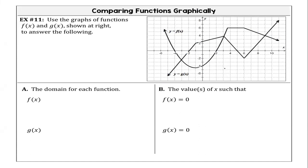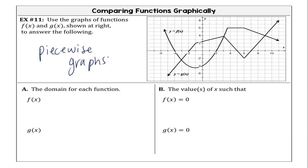Anyone know what type of graphs these are called? They're called piecewise. These are piecewise graphs — like the brackets and the different graphs. Your graphs are made up of different functions along the path.